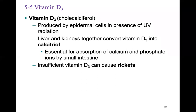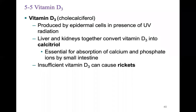Vitamin D is produced by epidermal cells in the presence of UV radiation. The liver and kidneys together convert vitamin D into calcitriol, which is essential for the absorption of calcium and phosphate ions by the small intestines. You must have calcitriol present to absorb calcium. Insufficient vitamin D can cause rickets, where lack of calcium absorption makes bones more brittle. This is why calcium supplements also include vitamin D — to ensure the calcium can actually be absorbed.